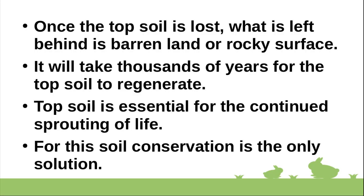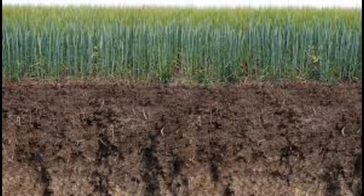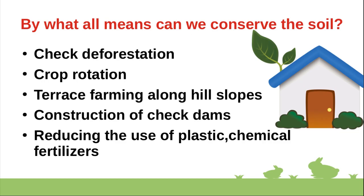Once the topsoil is lost, what is left behind is barren land or a rocky surface. It will take thousands of years for the topsoil to regenerate. Topsoil is essential for the continued sprouting of life. For this reason, soil conservation is the only solution. Soil can be conserved by checking deforestation, implementing crop rotation, contour ploughing along hill slopes, construction of check dams, and reducing the use of plastic, chemical fertilizers, and chemical pesticides.